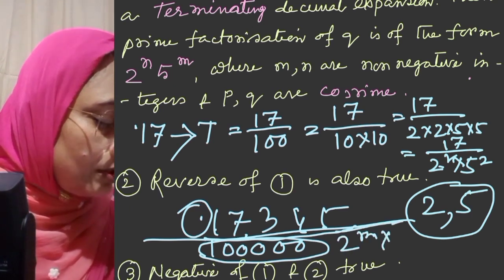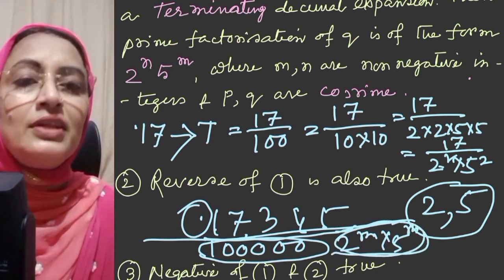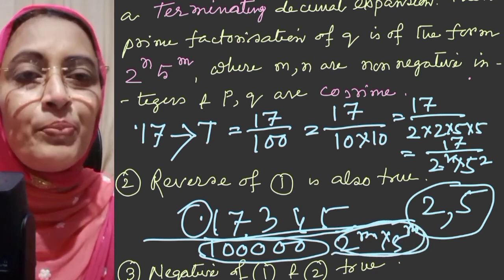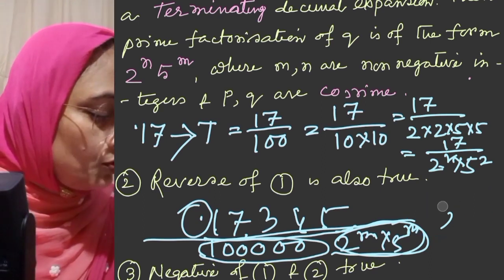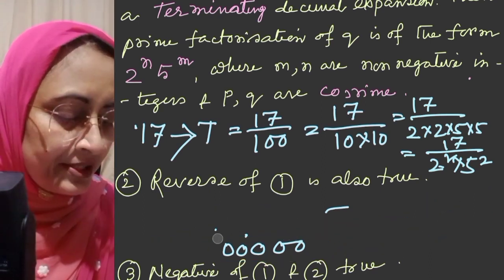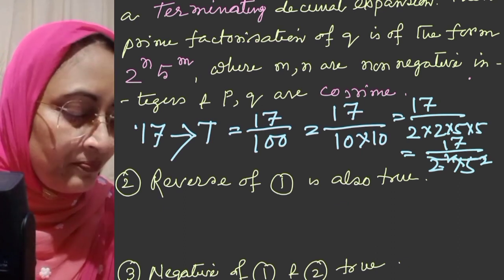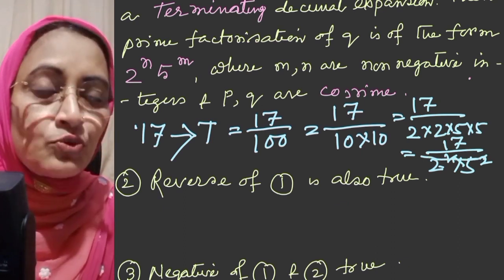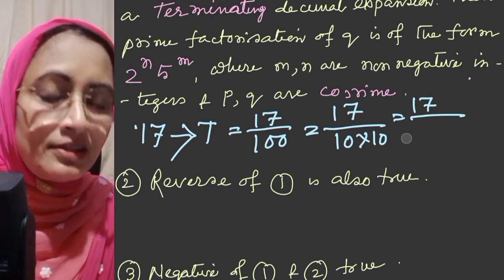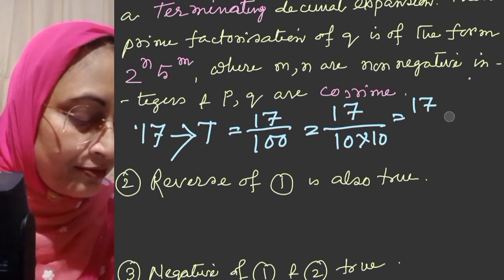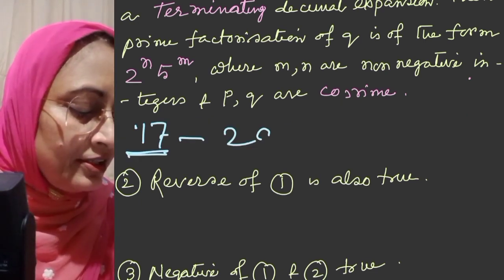We can write it in that form — something like 5 to the power 4. Next property: after how many decimal places will the remainder become zero and the decimal terminate? That means we will say the decimal number is terminating after how many decimal places — for example, terminating after two decimal places.